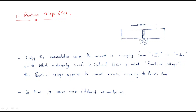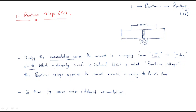What is reactance voltage? Generally, armature coils are inductor coils. Inductor means it is made with a coil — an inductor consists of reactance. So it has some reactance, and wherever there is reactance there will automatically be some drop, known as the reactance drop or reactance voltage, which we can name ER. During the commutation process, the current is changing from plus IC to minus IC.